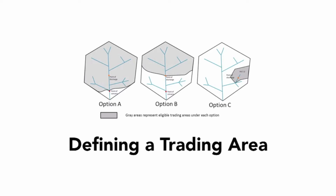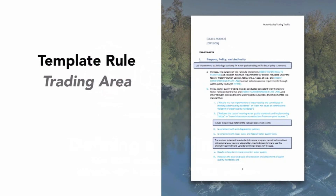I'm going to walk through one of the most common decisions that needs to be made in trading program design: the definition of a trading area. I'll use this example to show how each of the templates addresses trading area and give you a sense of the depth and breadth with which the different templates address a specific issue and how you can use them. Trading areas define the geographic boundaries within which buyers and sellers can conduct trades with each other. EPA's 2003 trading policy says that trading areas should coincide with a watershed or TMDL boundary.